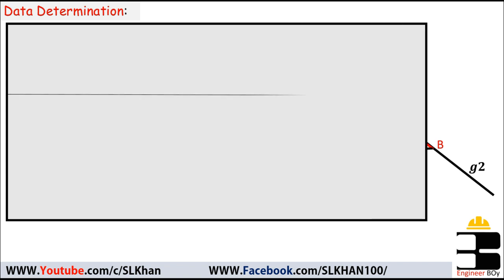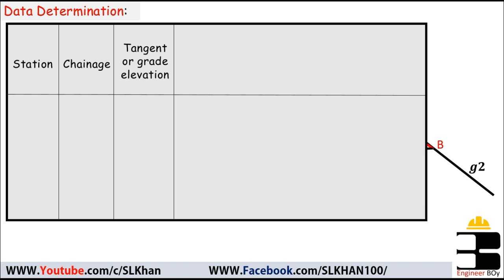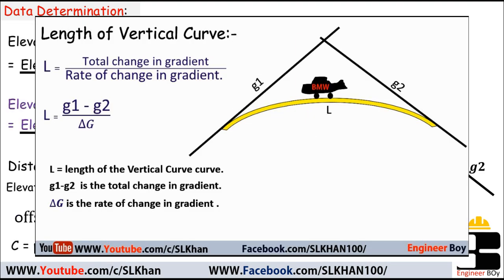In the first column, we put the stations, then the chainages, then the tangent or grade elevations, then the tangent corrections, and finally the elevations of curve points. These are the points shifted from the tangent intervals. If needed, remarks can be added to this table. This is a simple way to set out a vertical curve using the tangent correction method.